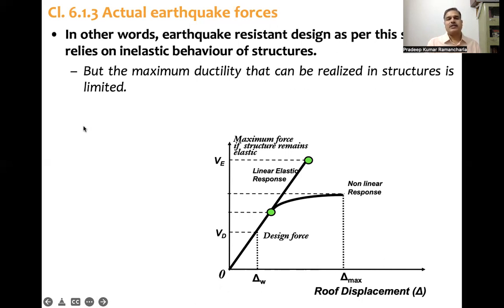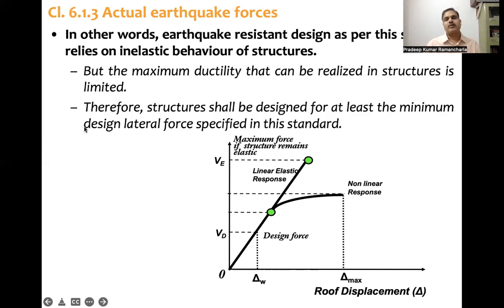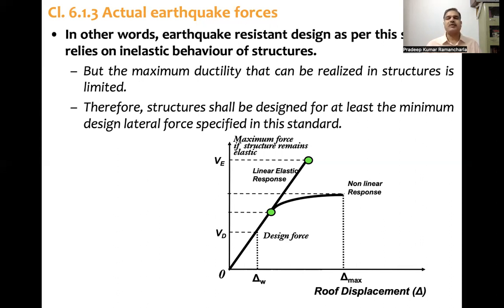Since the maximum ductility realizable in structures is limited, structures shall be designed for at least the minimum design lateral force specified in the standard. There are two aspects: the design base shear V_B from equivalent static analysis, and the minimum lateral force from Table 7, which provides zone-specific values. If earthquake forces from dynamic analysis are greater, those should be used; otherwise, V_B from the equivalent static analysis governs.